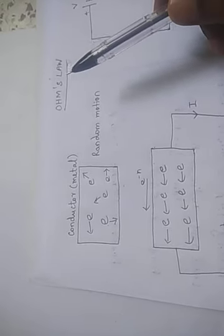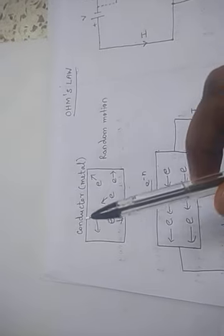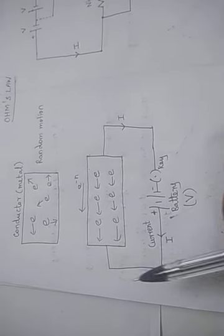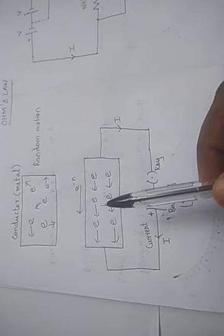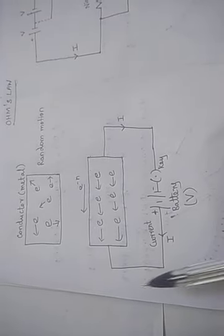Students, in this session, we are going to see about Ohm's law. As in the previous sessions, we saw that for the conductors, the free electrons are in random motion. When the same conductors are connected with the battery, the free electrons are drifted to move towards the positive terminal of the battery due to the electrostatic attraction between the positive and negative charges. The current will flow in the external circuit from positive to negative terminal of the battery.